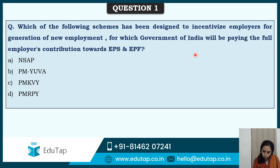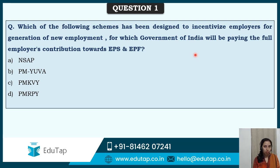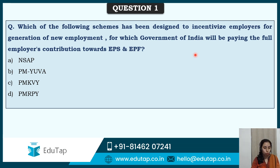Let me see the answers. All of you are going with option D, that is PMRPY. NSAP we covered in our previous lecture — National Social Assistance Program — so that can't be the answer. PMRPY, if you know the acronym, stands for Pradhan Mantri Rozgar Protsahan Yojana. So that's the answer to this question.